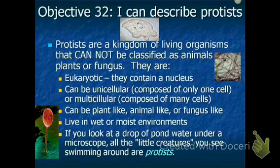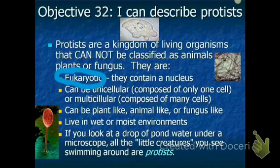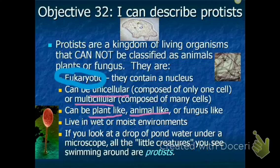Objective 32: I can describe protists. Protists are a kingdom of living organisms that cannot be classified as animals, plants, or fungus. They're eukaryotic, meaning they contain a nucleus. They can be unicellular — made of one cell — or multicellular, made of many cells. Protists are kind of having an identity crisis: some are plant-like with chloroplasts, some are animal-like and hunt or gather food, and some are fungus-like and decompose things. All protists live in wet or moist environments.